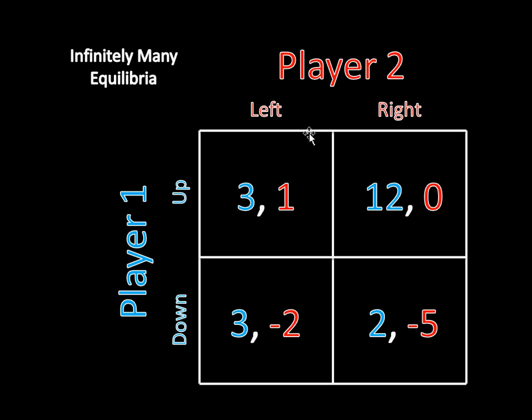So in this case, it's Player 2 playing Left that makes Player 1 indifferent between going Up and Down, and Player 1 going Up and Down, it doesn't matter which one he chooses, Player 2's never going to want to shift over to Right. So that's a partially mixed strategy Nash Equilibrium.